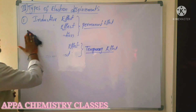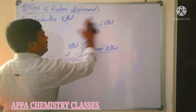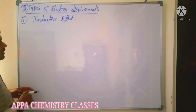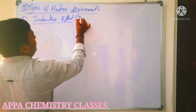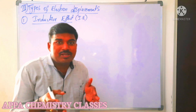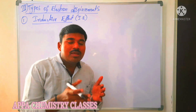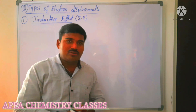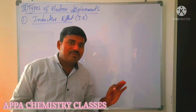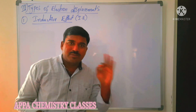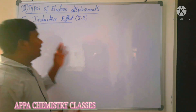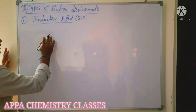Now we'll look at the inductive effect, which is a very important permanent effect, represented as IE. The inductive effect is defined as the displacement of sigma electrons along a covalent bond towards the more electronegative atom.